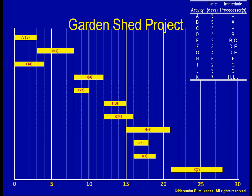We call this timeline of the project the Gantt chart. Thus, the earliest we can complete this project is in 28 days.